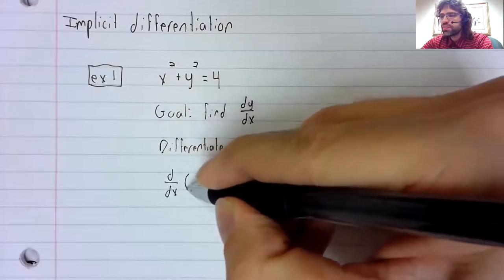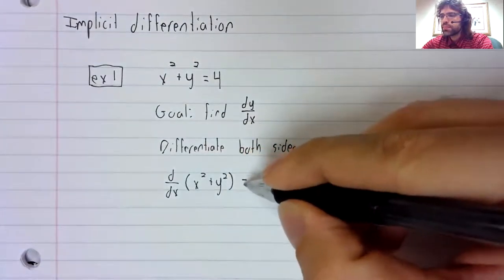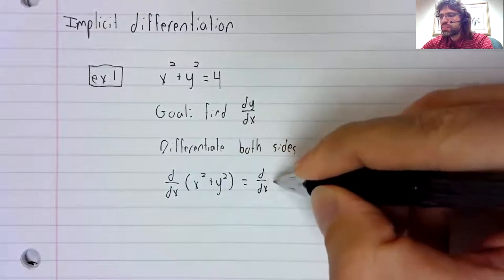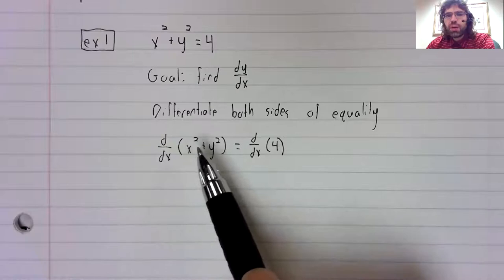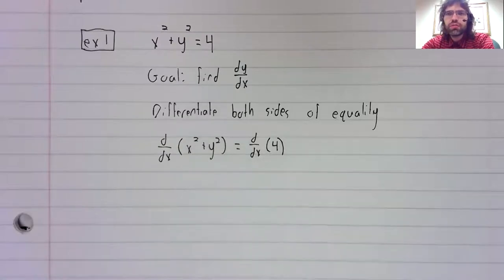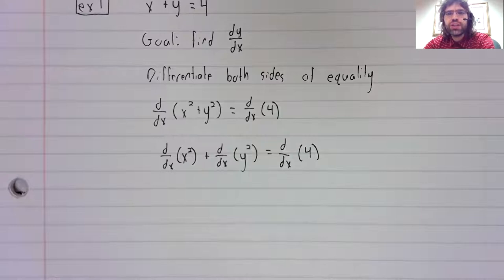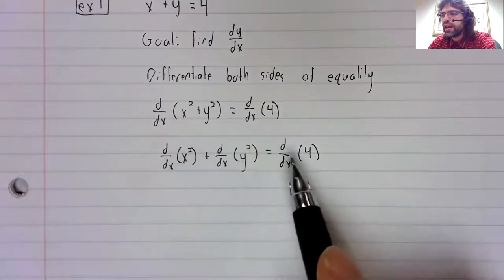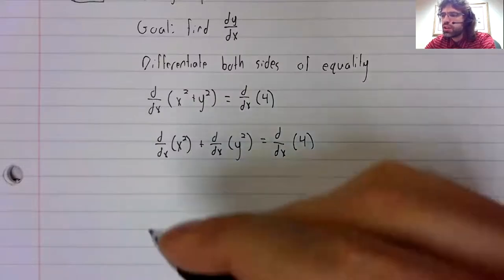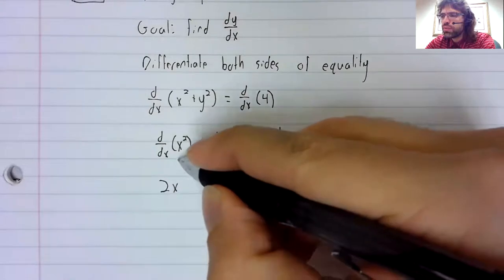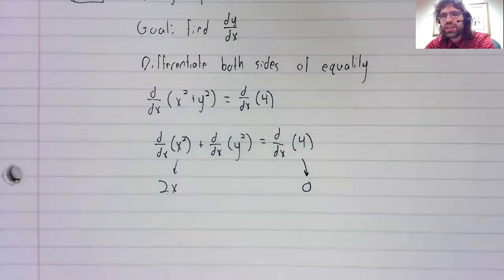Differentiate the left hand side. Differentiate the right hand side. The derivative of a sum is the sum of the derivatives. And of the three derivatives that I have written down, two of them don't really require any comment. The derivative of x squared is two x. The derivative of a constant is zero.